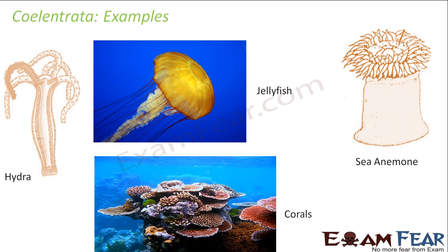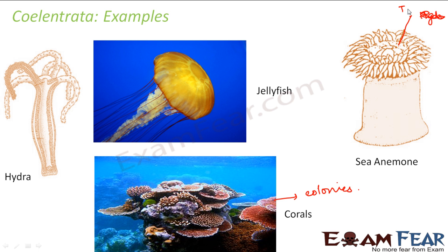Examples of Coelenterata include Hydra, jellyfish, corals, and sea anemone. Looking at corals, you can see many are grouped together — they live in colonies. For sea anemone, you can see leaf-like structures which are actually the tentacles that have stinging structures attached, helping them catch prey and intake food.